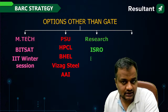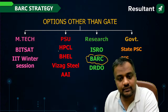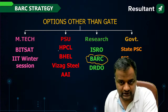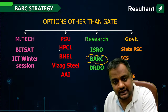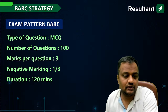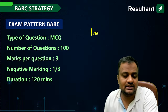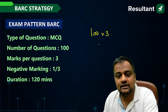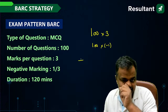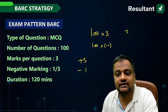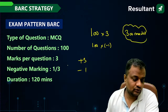BARC recruits through its computer-based test as well as through GATE score for the same scientist vacancy. The CBT pattern is: 100 questions, each carrying +3 marks and −1 for negative marking, making it 300 marks total. The duration is two hours.